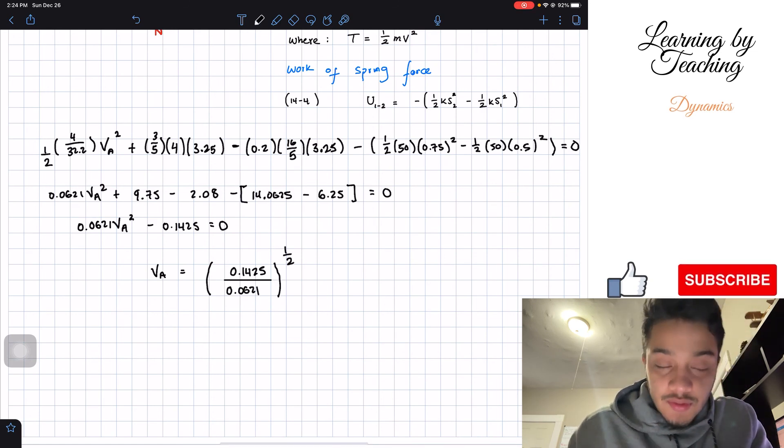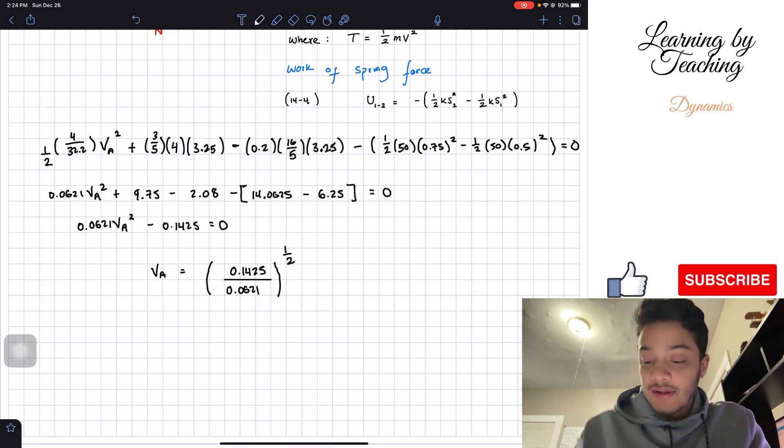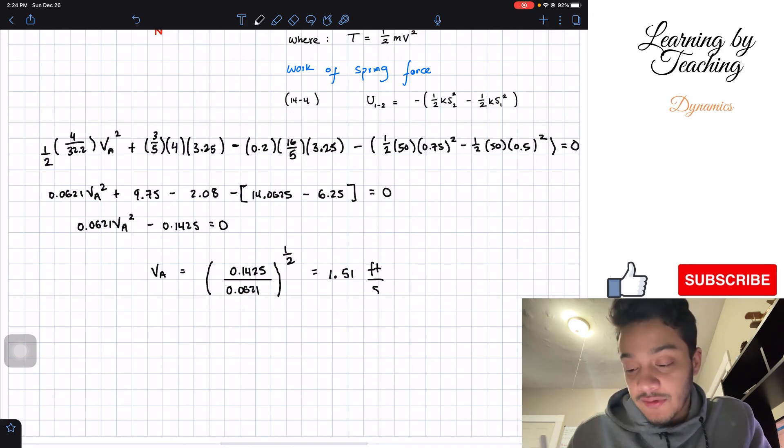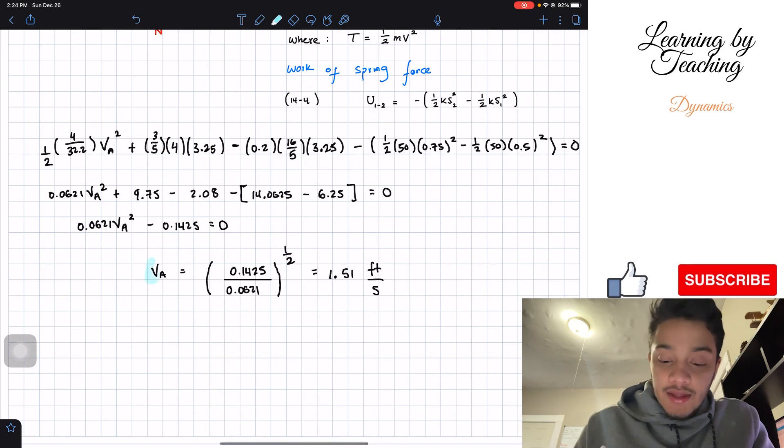And all this is going to be in the square root or to the power of one-half. And this will give us a total of 1.51. And since we're in English units, feet per second. And this is our final answer for this problem.